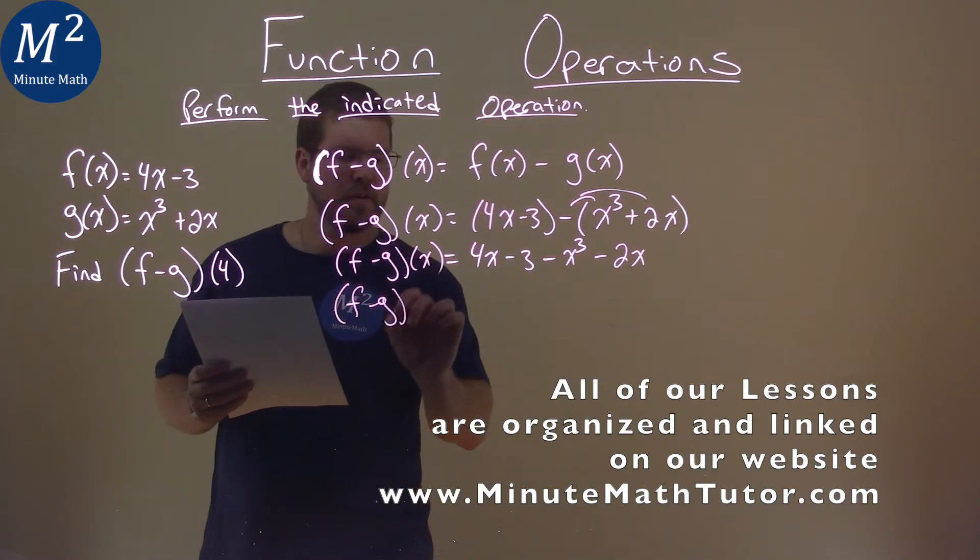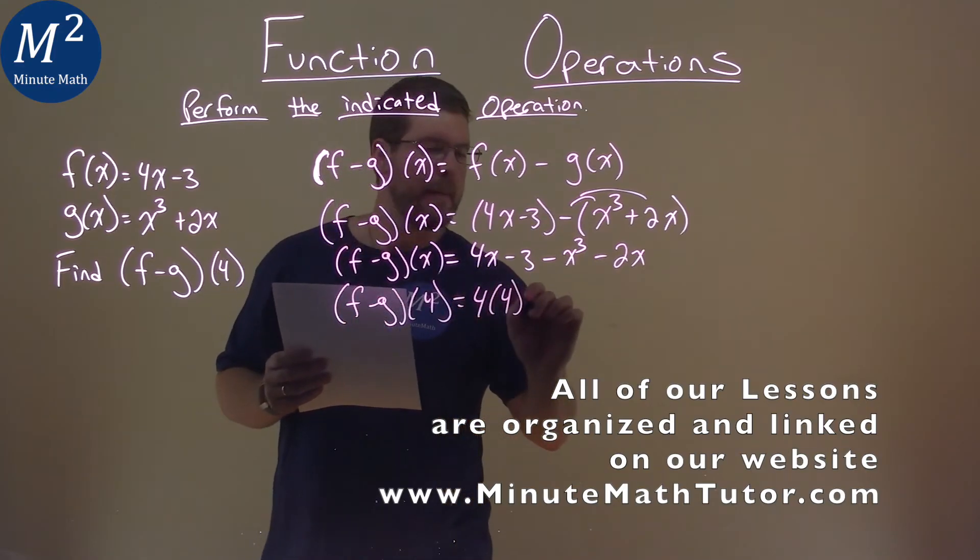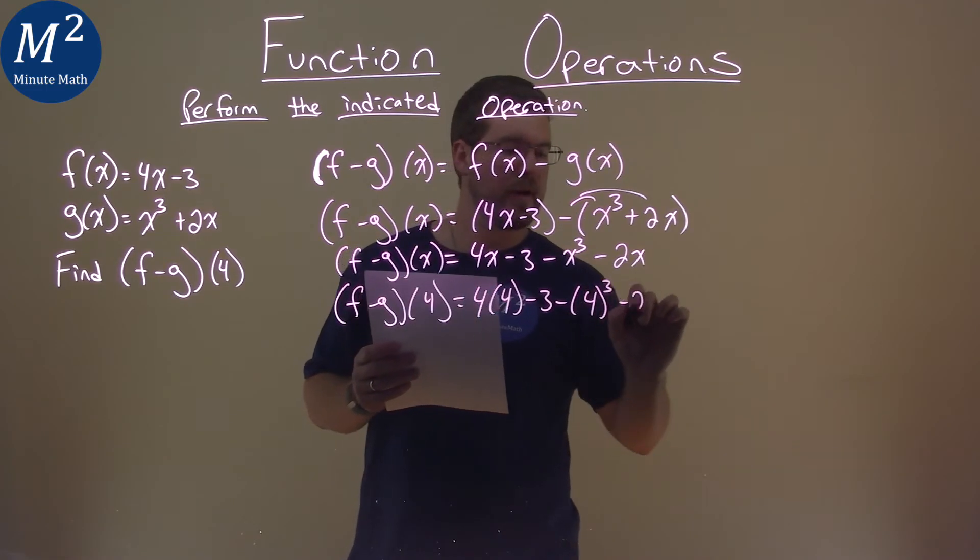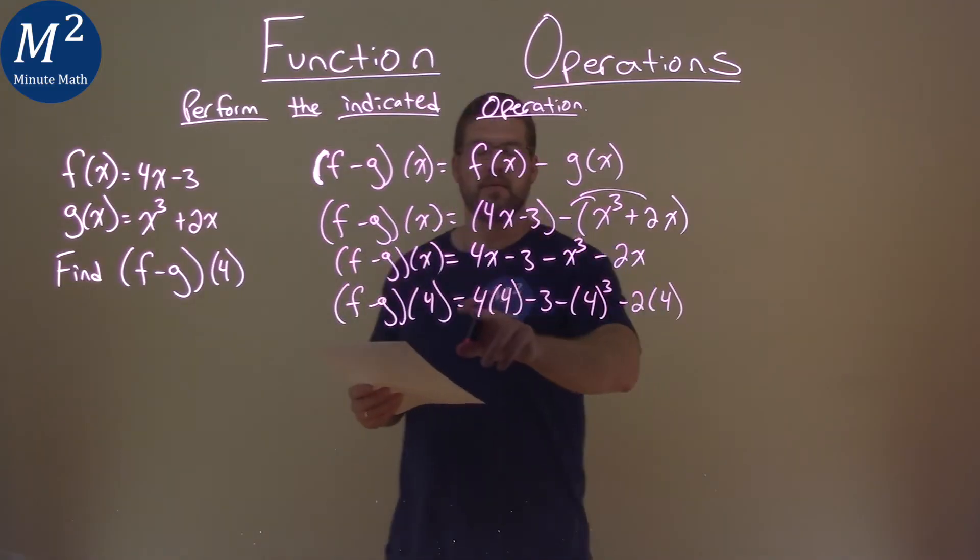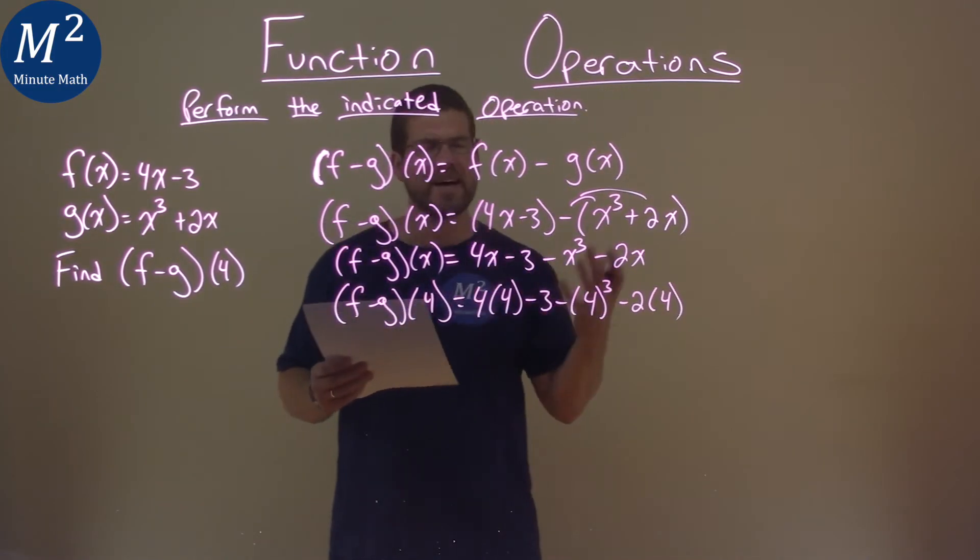(f - g)(4) equals 4 times 4 minus 3 minus 4 to the third power minus 2 times 4. Notice, every time I substitute a 4 in for x, I put it in parentheses. It helps make sure I don't lose anything.